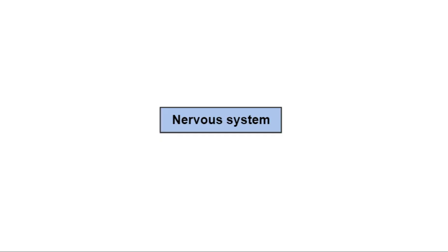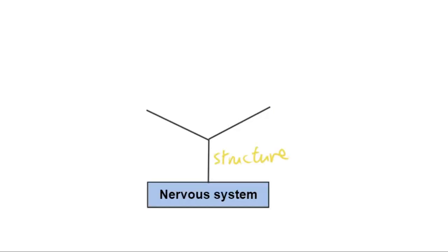In this video we'll be looking at different ways to classify and organize the nervous system. There are two major ways to consider this, which is either structurally or functionally.